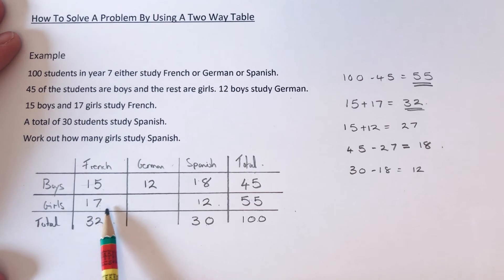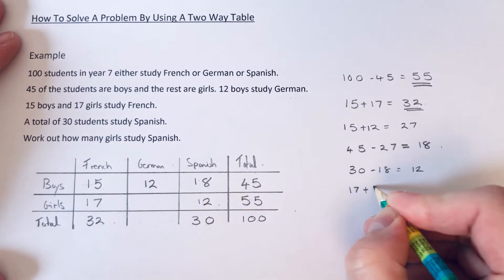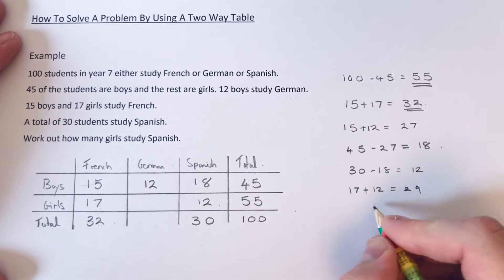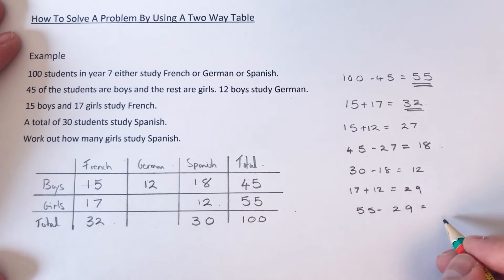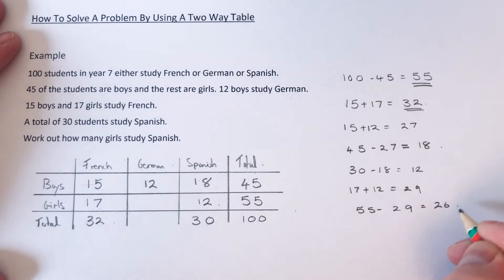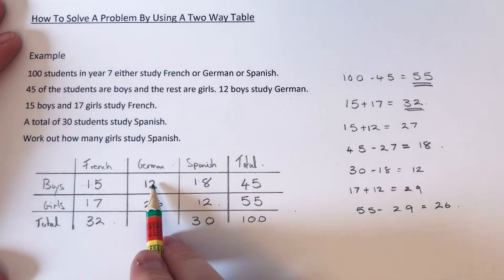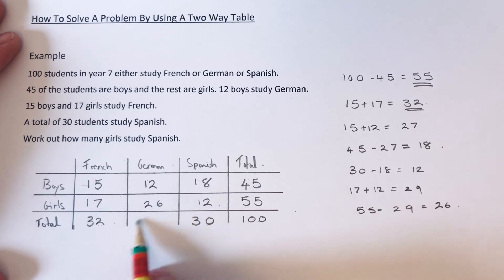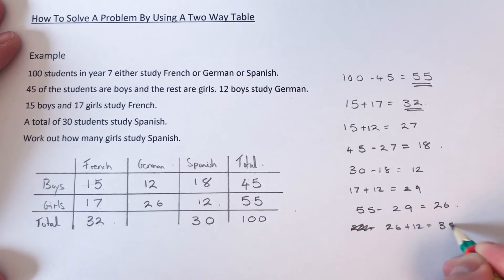So let's work out how many girls study German. If we do 17 add 12 and take it off the 55, that's 29. So 55 take away 29 is 26. And then if we add these two numbers up here, that will give us how many German students we've got. So 26 add 12 is 38.